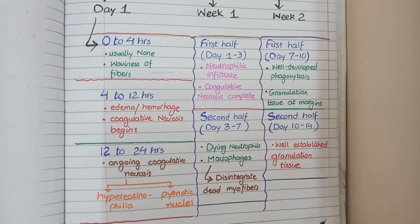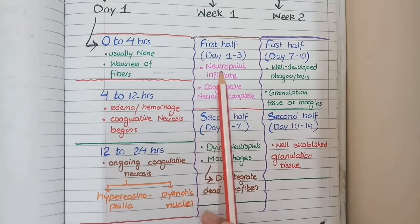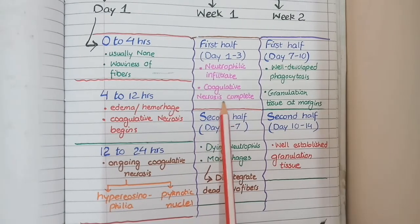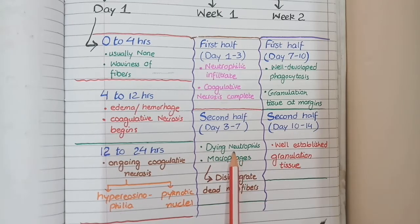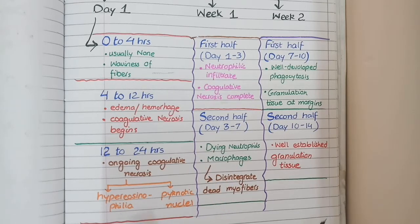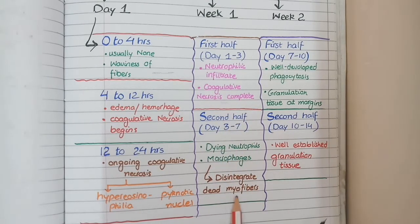Week 1 is called the era of invasion. In the first half — day 1 to day 3 — the invaders are neutrophils, so you see neutrophilic infiltrates on microscopic view, and by the time neutrophils arrive, coagulative necrosis is complete. In the second half — day 3 to day 7 — the new invaders are macrophages, while the previous neutrophils have started to die. You see dying neutrophils, macrophagic infiltrates, and disintegrated dead myofibers as macrophages digest the necrotic material.